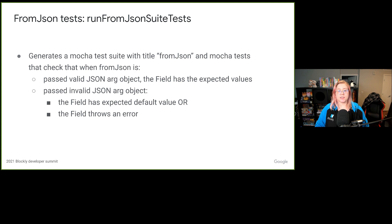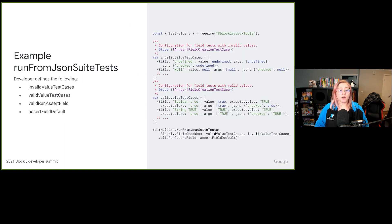Similar to RunConstructorSuiteTests, RunFromJsonSuiteTests should reduce the amount of code needed to set up FromJson tests. It generates a Mocha test suite titled 'FromJson' and takes in the same parameters as RunConstructorSuiteTests. The difference is that this test covers creating the field using the FromJson method, while the latter tests creation through the field's constructor. The configuration for all the parameters is exactly the same, and it's generally expected that your constructor and FromJson method handle values the same, so you should be able to reuse the same parameters.